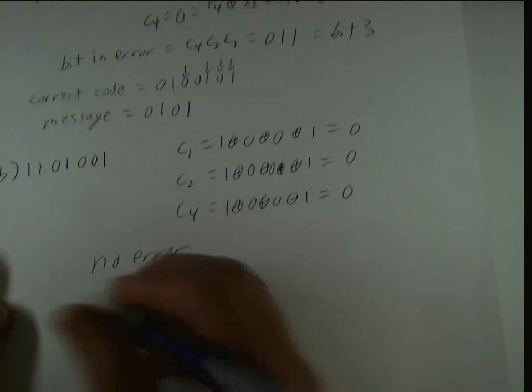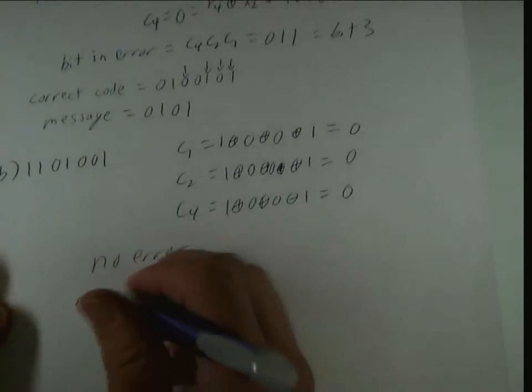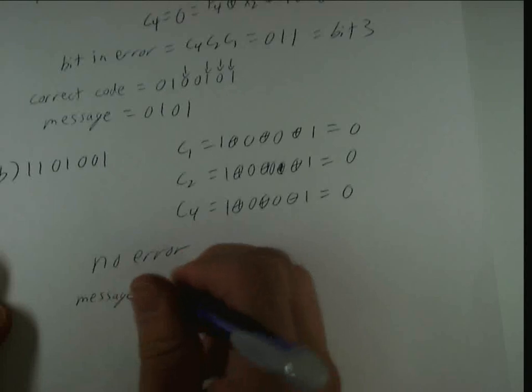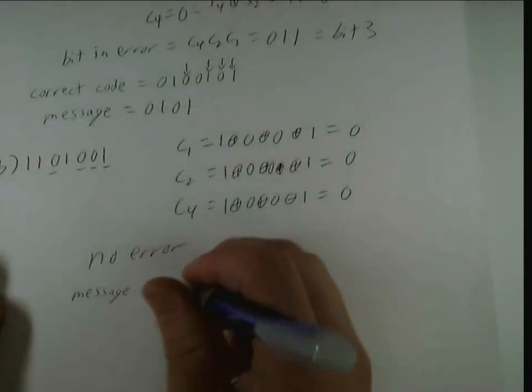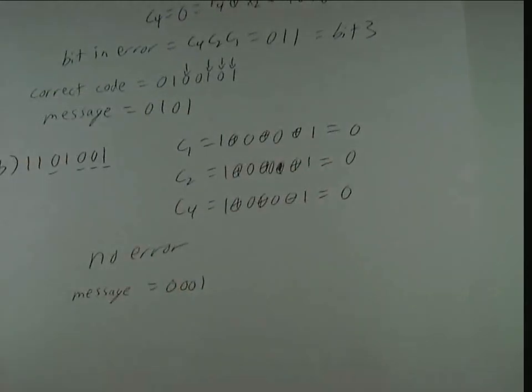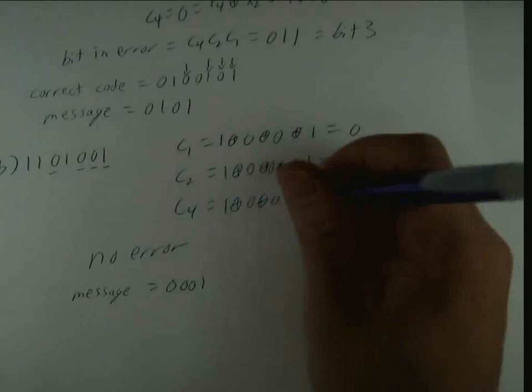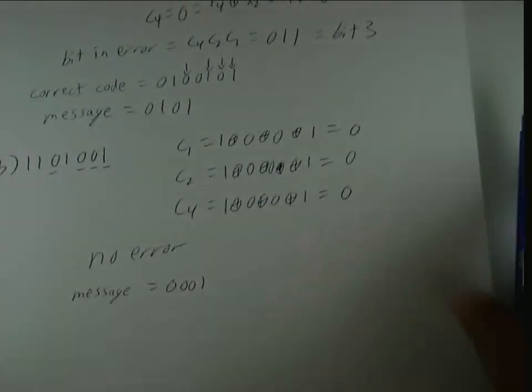And, we need to figure out our message. There's going to be this bit, this bit, this bit, and this bit. So, 0, 0, 0, 1. And, you can follow a similar procedure for the remaining parts of problem 2.